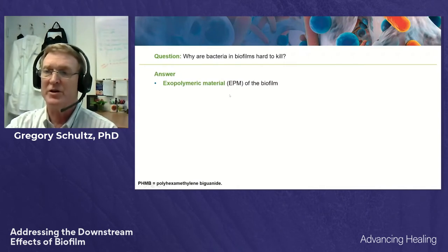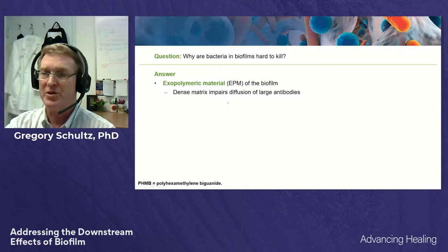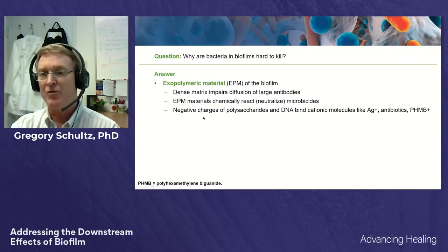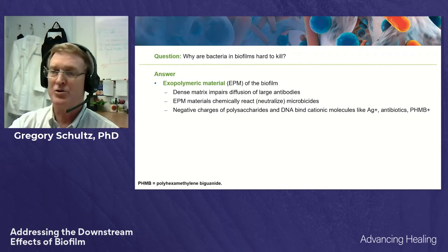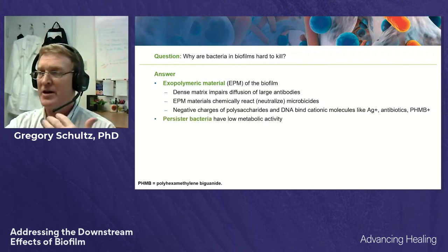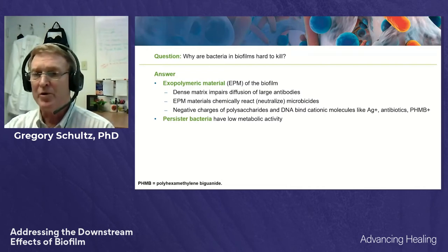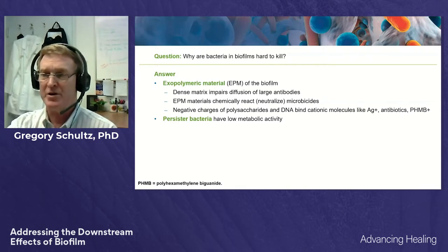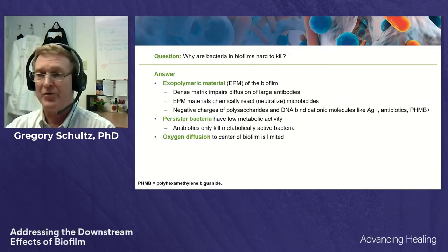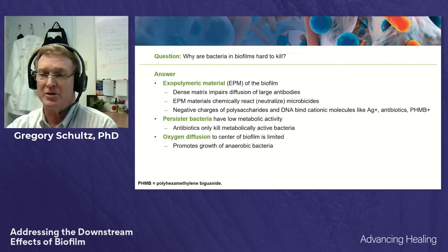Why are these biofilms so hard to kill? There are multiple reasons. The exopolymeric matrix prevents diffusion of large molecules in easily, and can chemically react with and neutralize some microbicidal agents. Most biofilm matrices have a high net negative charge due to polysaccharides and DNA, which can bind cationic components such as silver, antibiotics, and PHMB. Most importantly, there are frequently persister bacteria with low metabolic activity in mature biofilms — antibiotics only kill metabolically active bacteria. The metabolically active bacteria tend to be on the outer shell of the biofilm, reducing oxygen diffusion to the center and creating a niche where anaerobic bacteria can survive.